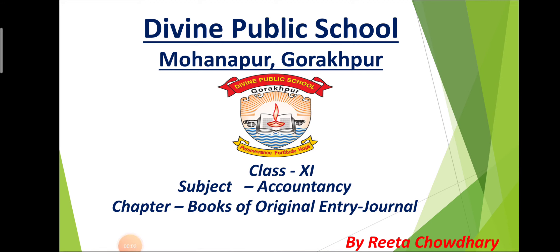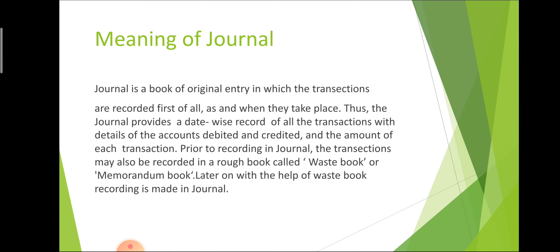Hello students, today we are going to start our new chapter of accountancy class 11th, and the name of the chapter is books of original entry, that is called journal. First of all, we will have to know what is the meaning of journal. Journal is the original entry of the book — it is the primary book in which the transactions are recorded first. In journal, chronological, that is date-wise, recording is held.